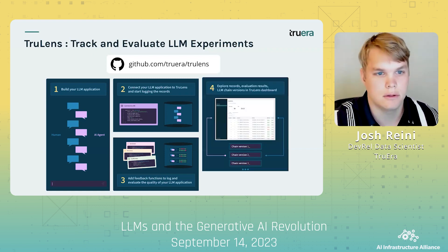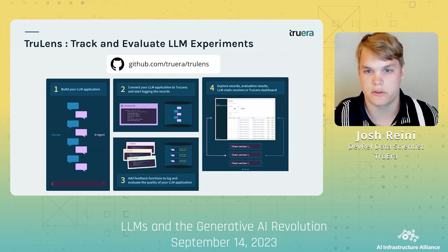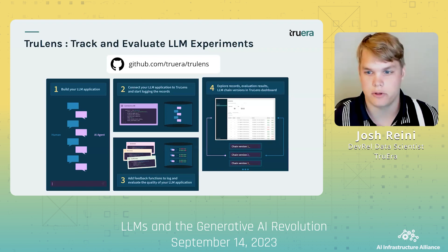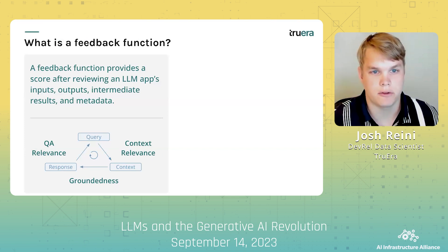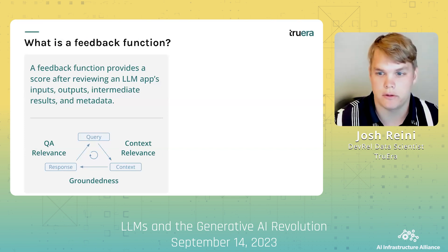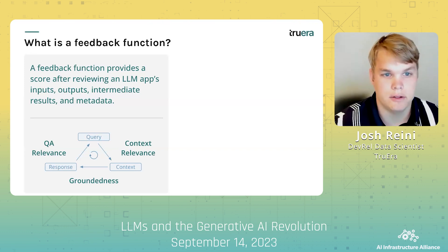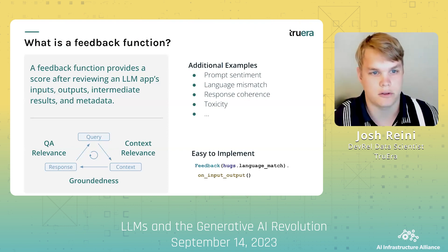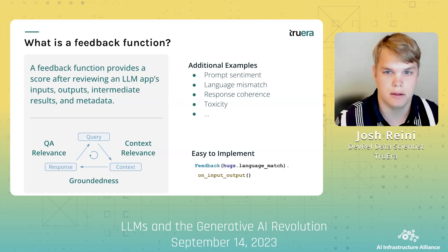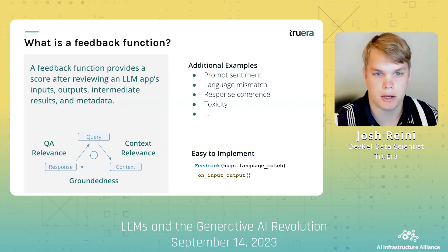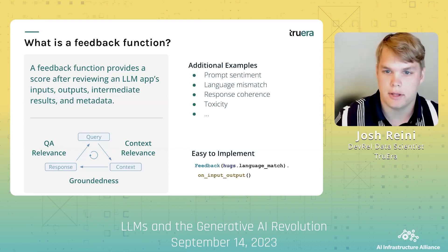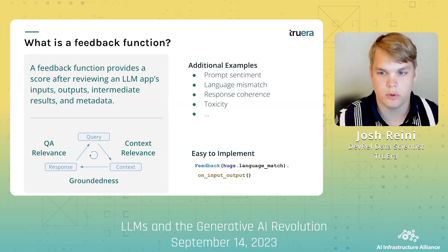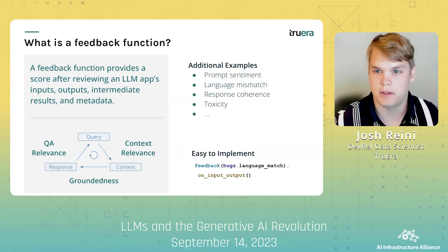Then we can use our Streamlit dashboard to explore records and evaluation results alongside key metrics like cost and latency. Last, you can iterate and select the optimal application configuration or version. A feedback function provides a score after reviewing an LLM app's inputs, outputs, intermediate results, and metadata. This includes evaluations from the non-hallucinatory triad, but also evals like sentiment, language matching, and toxicity. We've implemented a number of these out of the box — all you need to do is simply call the feedback class, include the model provider and feedback function you'd like to use, and add a pointer to the text you'd like to run your evaluation on. It's also an extensible framework where you can build custom evaluations specific to your application's requirements.